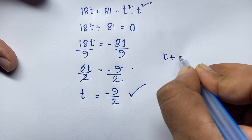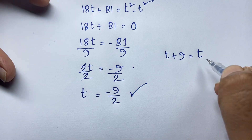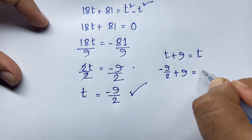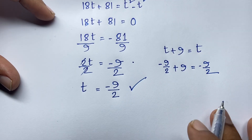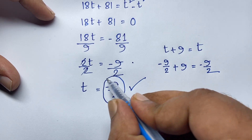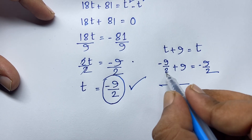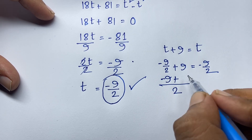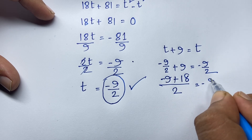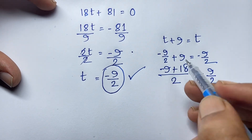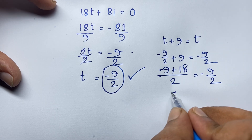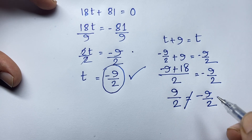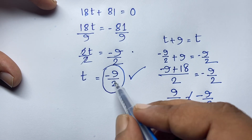Our original question is √(t + 9) = t. Substituting t = −9/2: √(−9/2 + 9) = −9/2. The common denominator is 2, so −9/2 + 18/2 = 9/2. So the left-hand side is √(9/2) = positive 9/2, but the right-hand side is −9/2. Since 9/2 ≠ −9/2, this is not a valid solution.